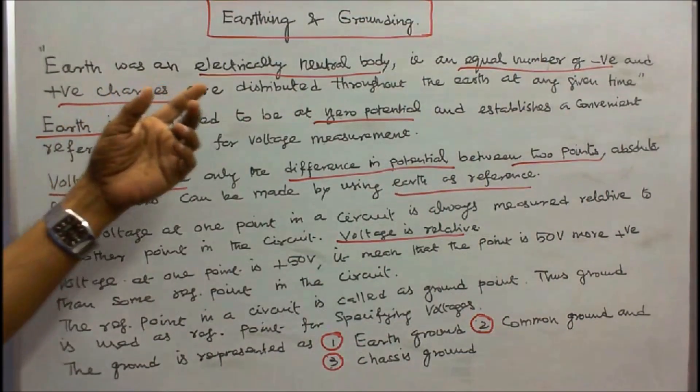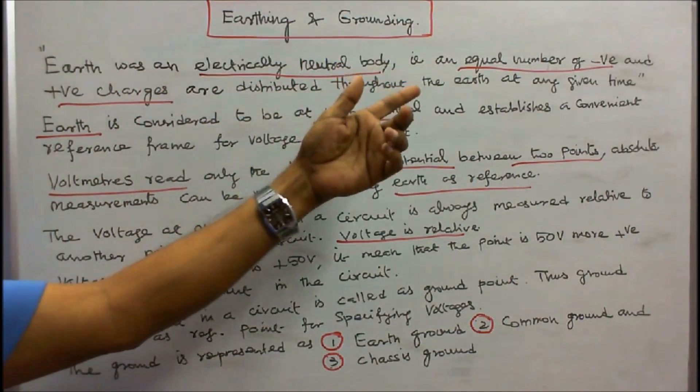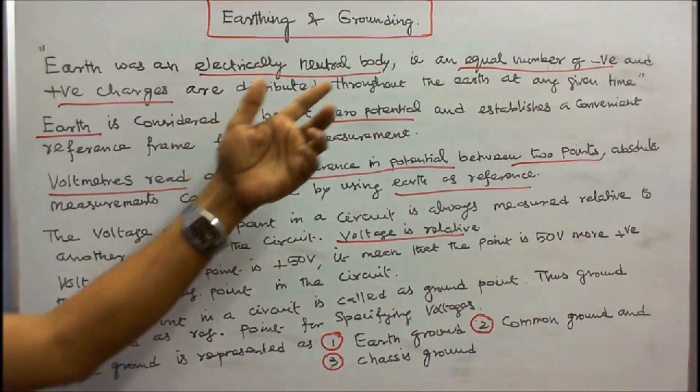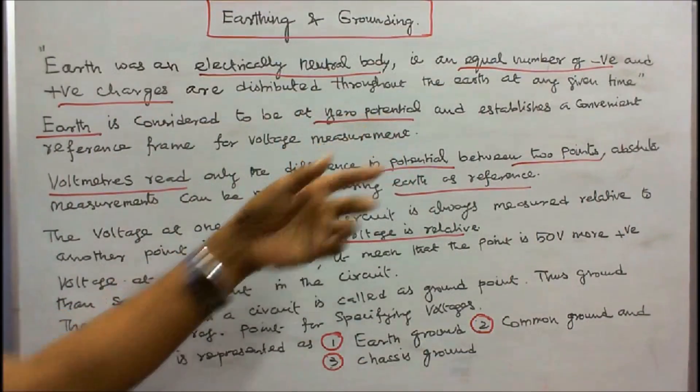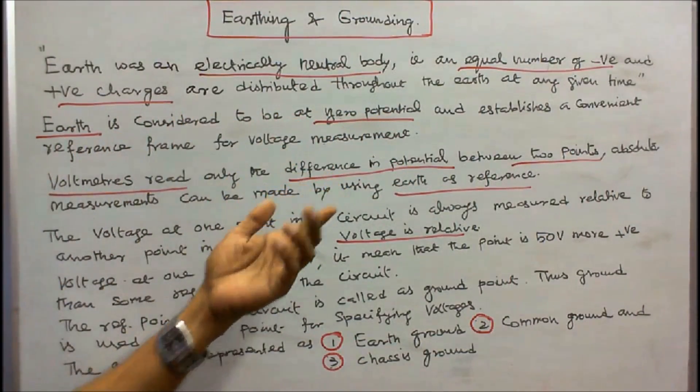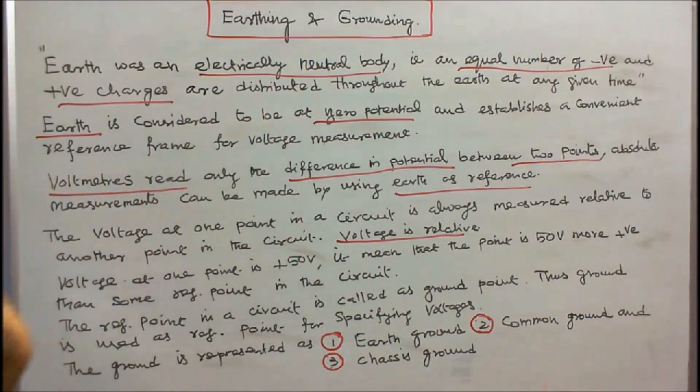Earth was an electrically neutral body, that is, an equal number of negative and positive charges are distributed throughout the earth at any given time. Earth is considered to be at zero potential and establishes a convenient reference frame for voltage measurement.